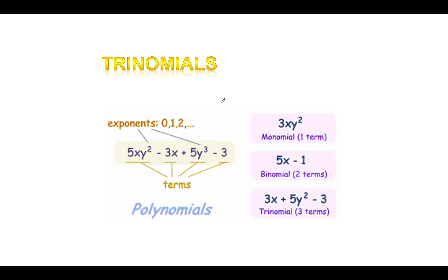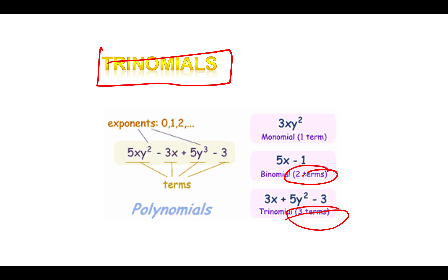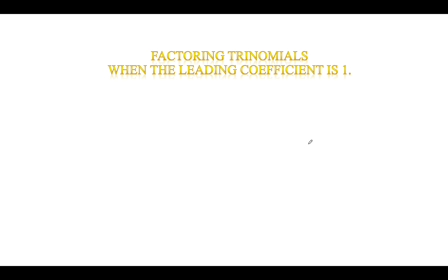Our main focus is going to be trinomials — three terms. We'll also deal with binomials — two terms. When we take out a greatest common factor we're really talking about a monomial — one term. 'Poly' means many, 'nomial' means term, so polynomial means many terms. We'll work with polynomials for a while here as we continue.